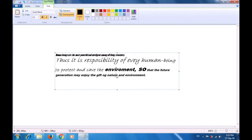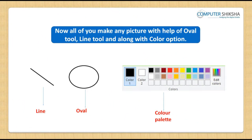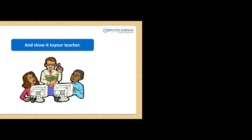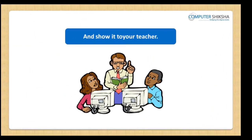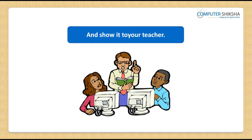This is how you make use of the bold, italics, and underline options on your paint sheet. Now, all of you make any pictures by yourselves using the line tool and oval tool along with the color option, and then show the same to your teacher.